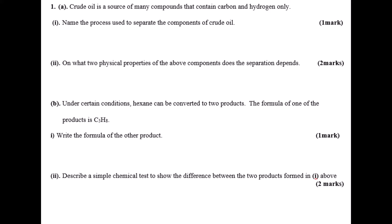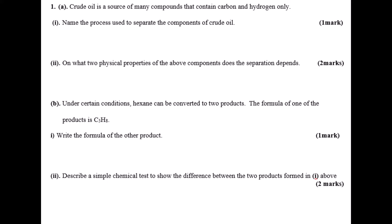Part B: under certain conditions hexane can be converted to two products. You're given one of the products is C3H8. Write the formula of the other product, then describe a simple experiment that can differentiate the two products obtained from hexane.